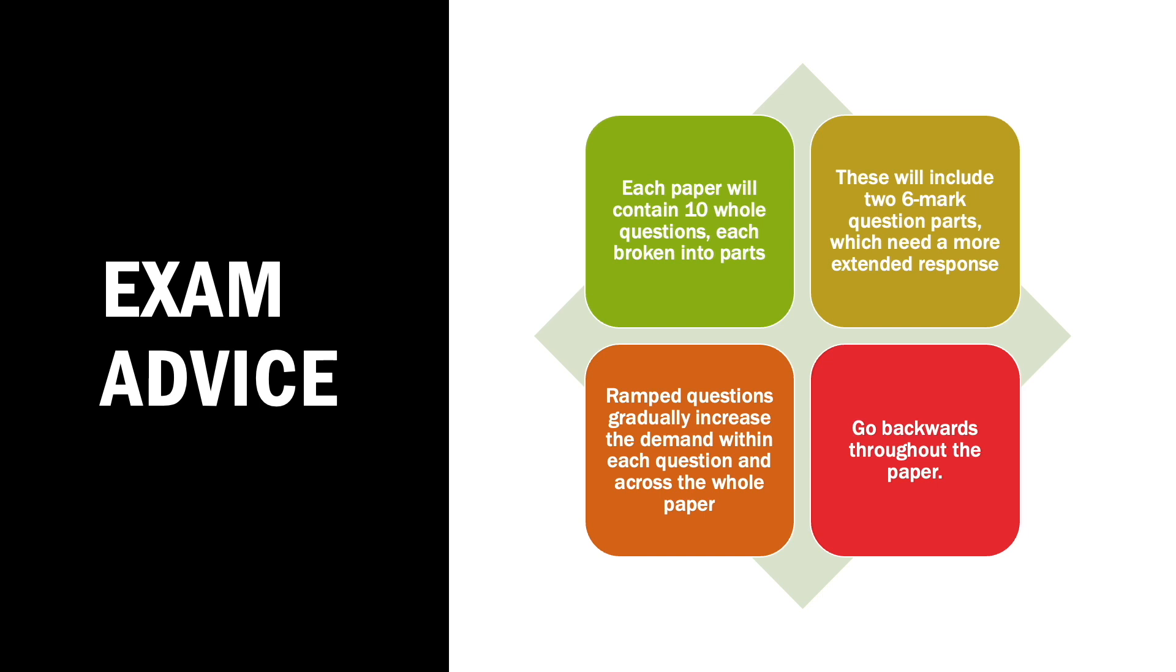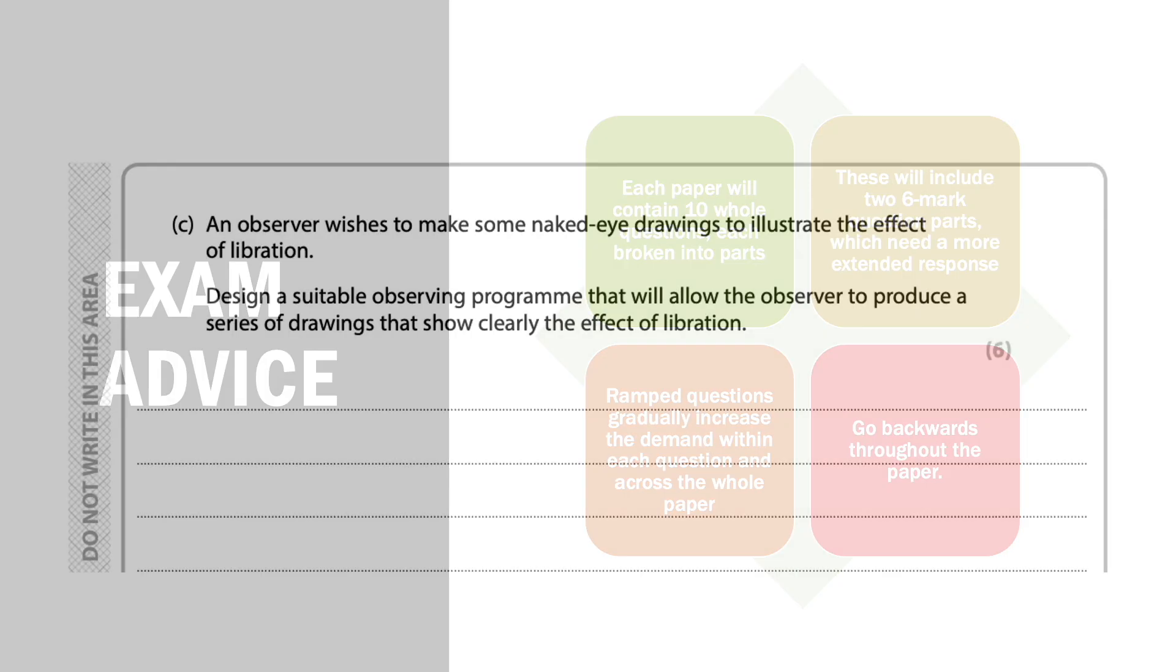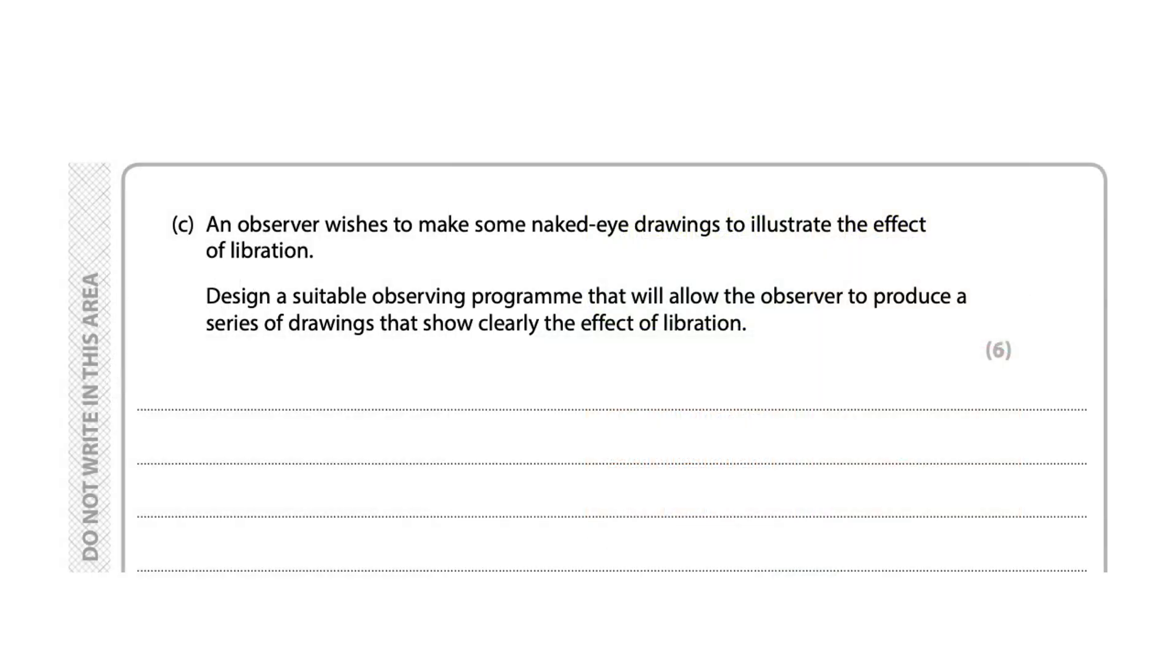Now, let's look for the six mark question. So, let's talk about the six marker. This is an example of a six marker question, which shows you the importance of observations like I was talking about with the assessment objectives. Some naked eye drawings to illustrate the effect of libration. Design a suitable observing program that will allow the observer to produce a series of drawings that clearly show the effect of libration. So, when we see this kind of question, we should really be looking at the kind of things that we should be thinking about with an observation. So, some relevant points that they've suggested on the mark scheme are things like how many months, so like how long the observation should take place over.